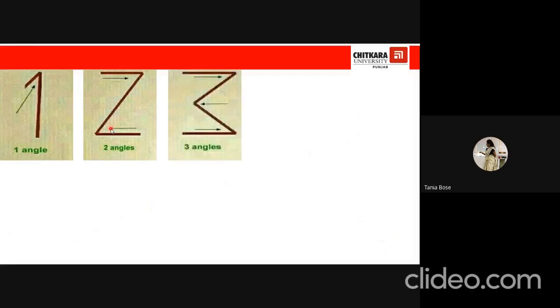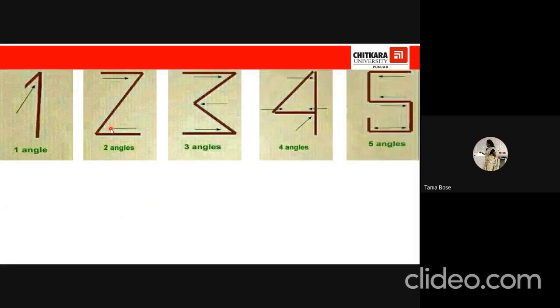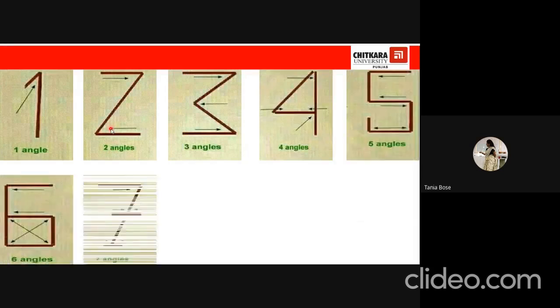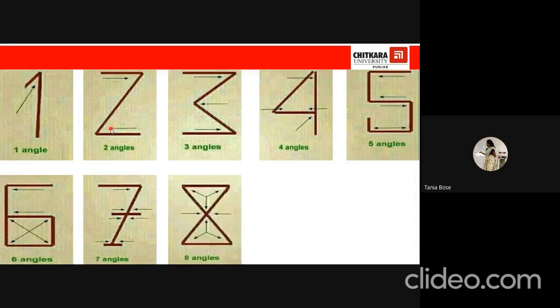Have you ever thought why one is called one only? Can you see that one has only one angle in it, and hence it is called one? Likewise, let's see two. In two, there are two angles, and so it is called as two. In two, you can see the concept with three, with four, with five, with six, with seven, with eight, with nine, and with zero.